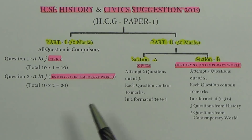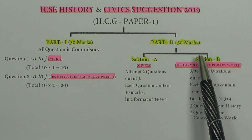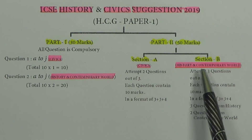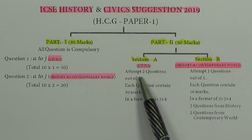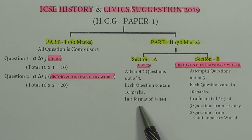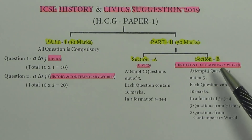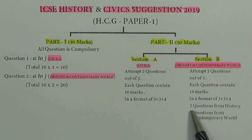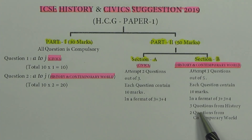So Part 1 is 30 marks in total. Part 2 is a 50-mark paper divided into two sections: Section A is the civics part, and Section B is History and Contemporary World. In Section A, attempt 2 questions out of 3 — each question is 10 marks in a format of 3+3+4. In Section B, attempt 3 questions out of 5, each worth 10 marks in a format of 3+3+4. There are 3 questions from History and 3 from Contemporary World, so you can choose all 3 from History or mix between History and Contemporary World.